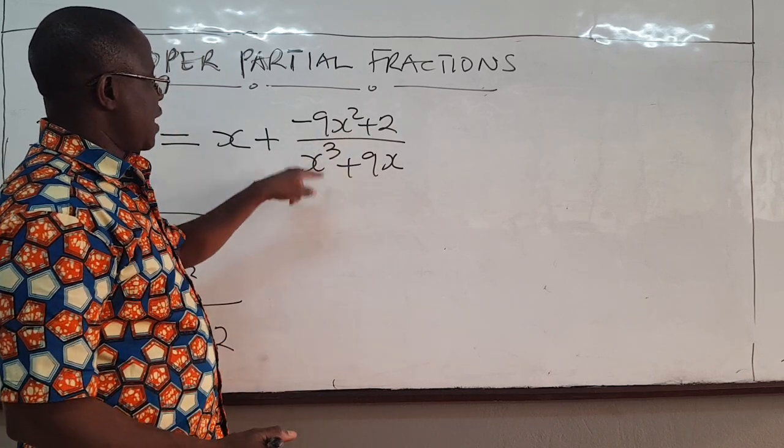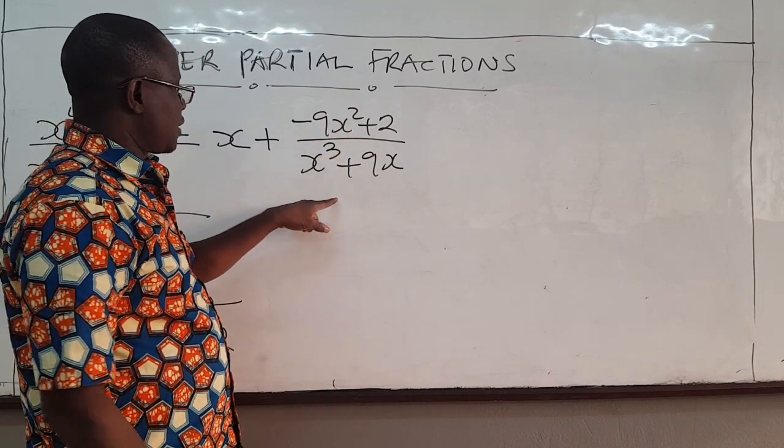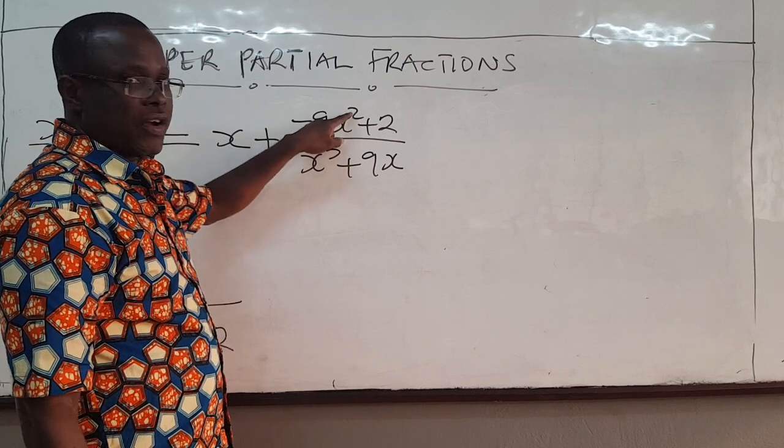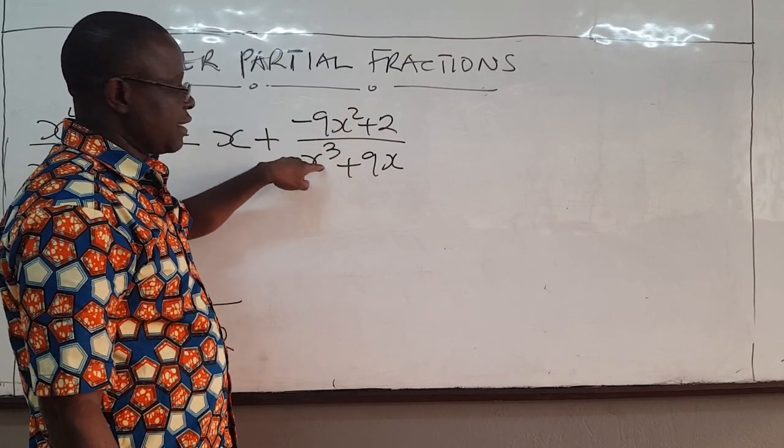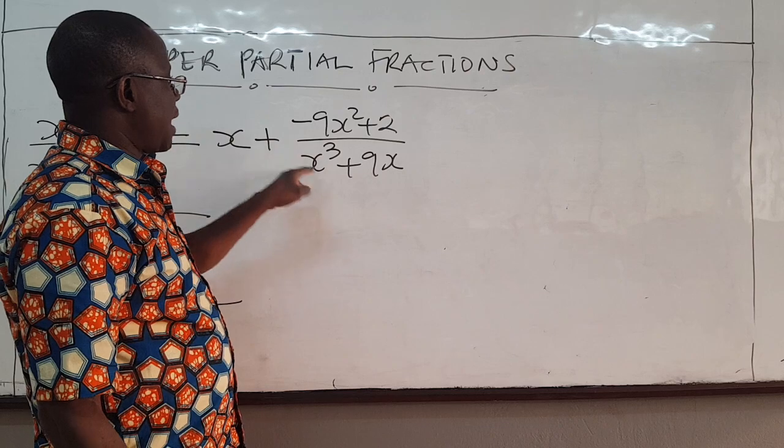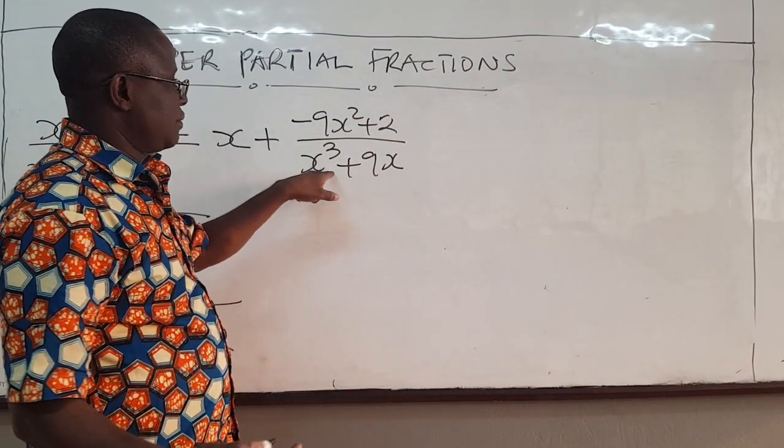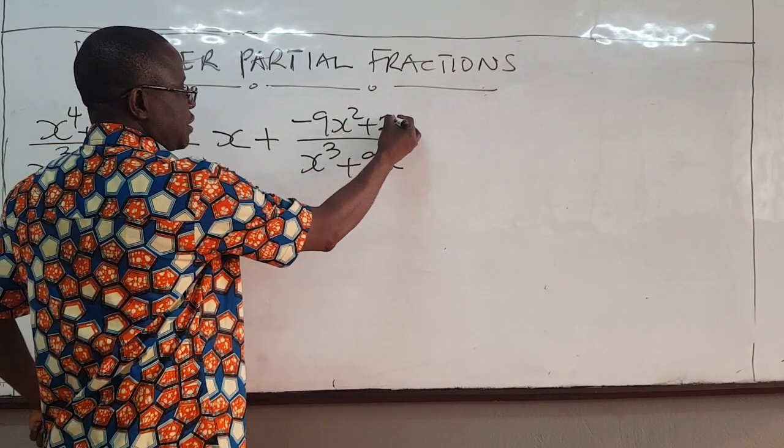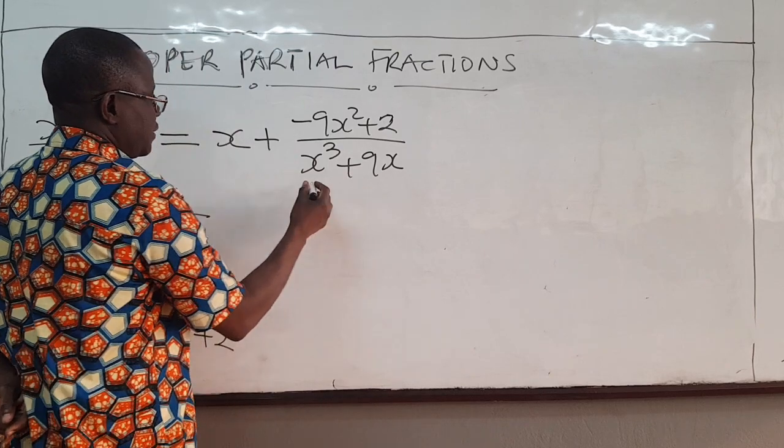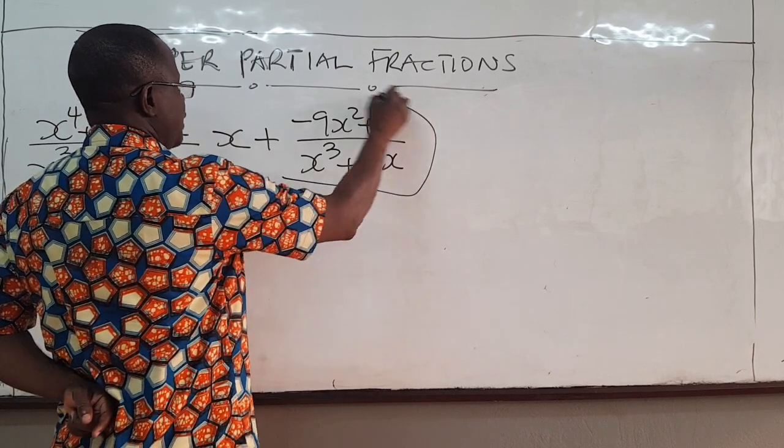Now you notice that this number is a proper rational fraction because the degree of here, this 2 is less than the degree of the denominator. And so we then apply our previous techniques to this to decompose it into partial fractions. So when you take this, take this guy.